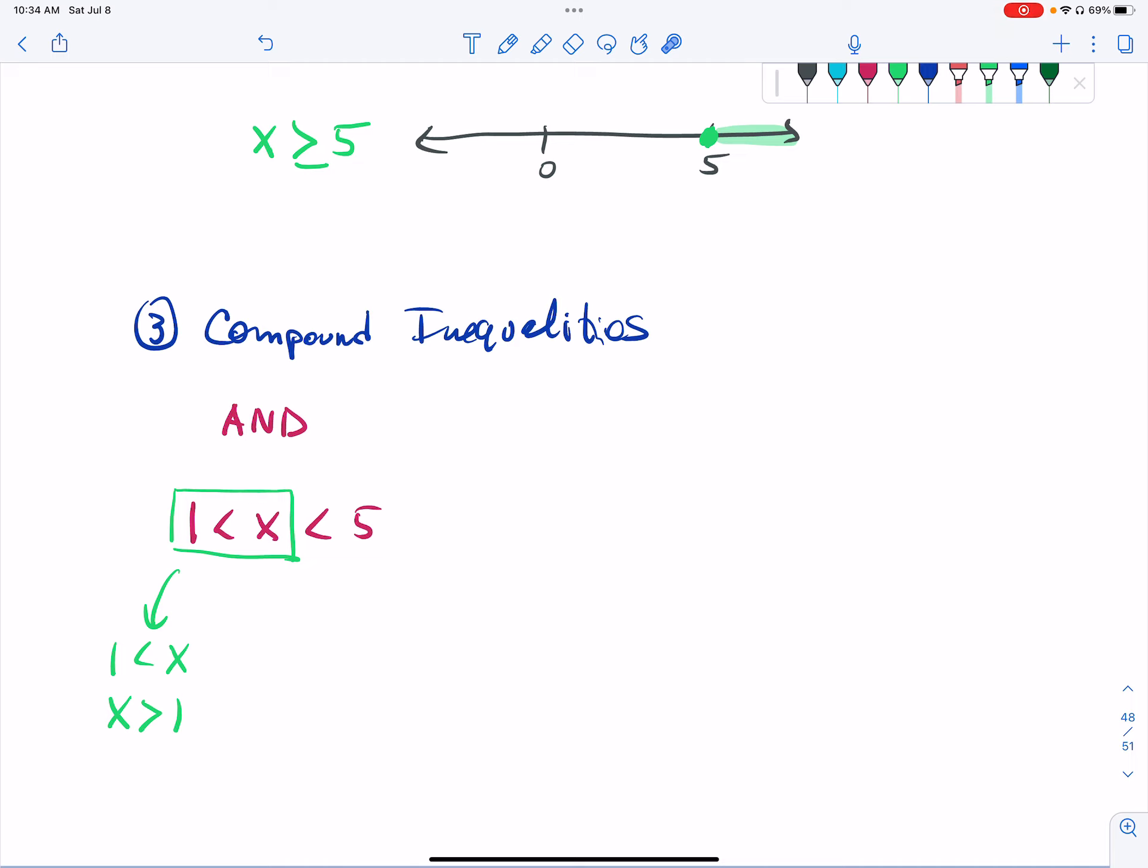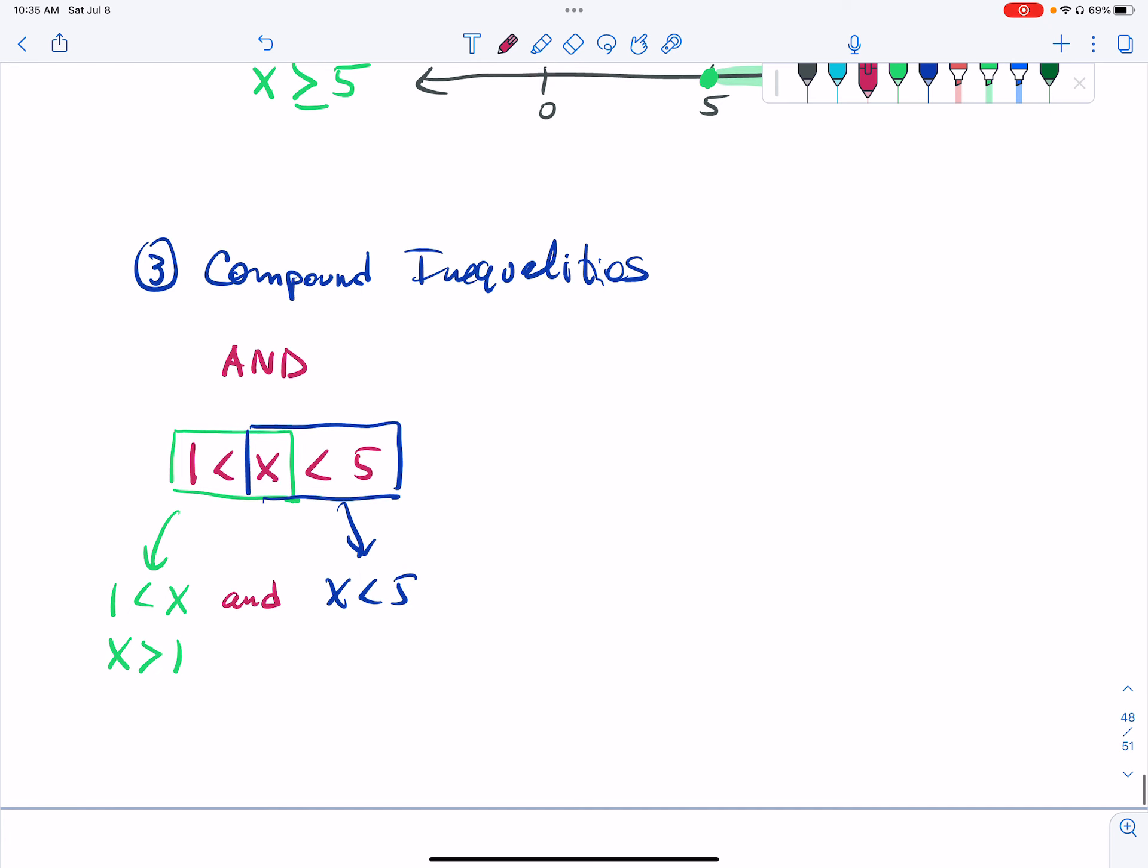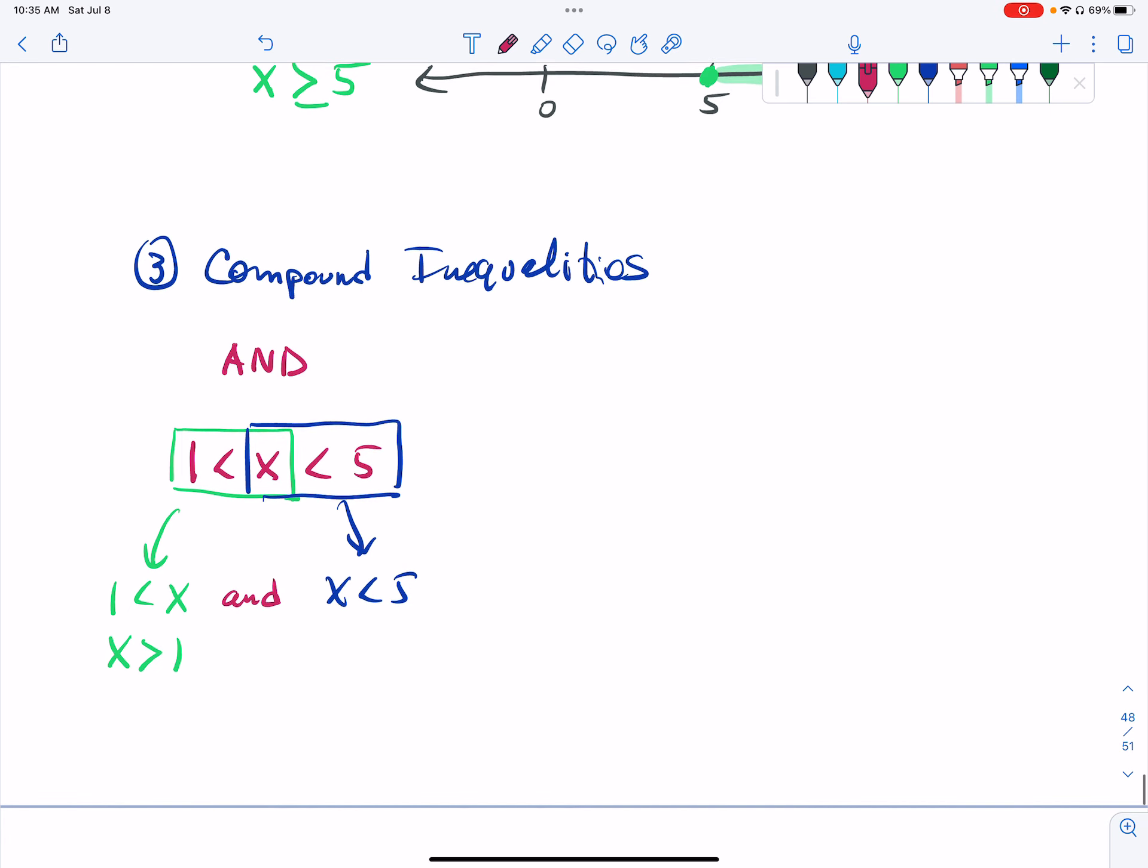Okay. And then the second one that is implied by this compound inequality is x is less than 5. And both of these things have to be true. And we separate these things usually with the conjunction and. So now let me put these things on a number line and see what they look like. So I'll put a 0 for reference, the number 1, and the number 5.